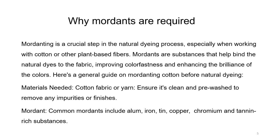Mordanting is a crucial step in the natural dyeing process, especially when working with cotton and other plant-based fibers. Mordants are substances that help in binding the natural dyes to the fabric, improving color fastness and enhancing the brilliance of the colors. Here is a general guide on mordanting cotton before natural dyeing. The material needed is clean, pre-washed cotton fabric or yarn to remove any impurities or finishes. It is then treated with tannic acid, followed by the mordanting step using common mordants such as alum, iron, tin, copper, or chromium.